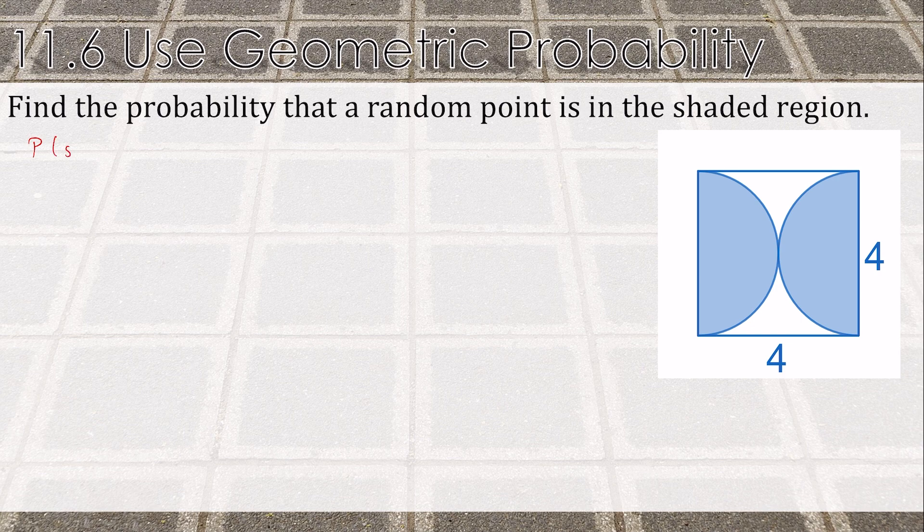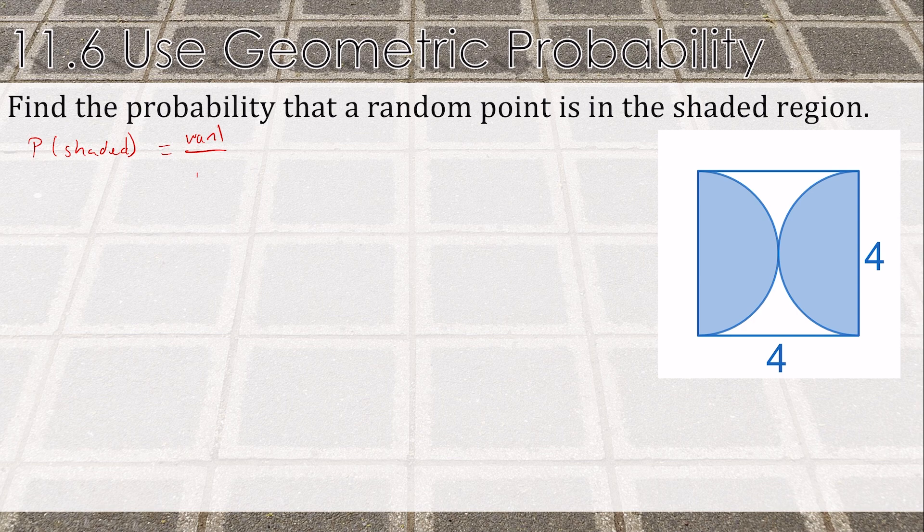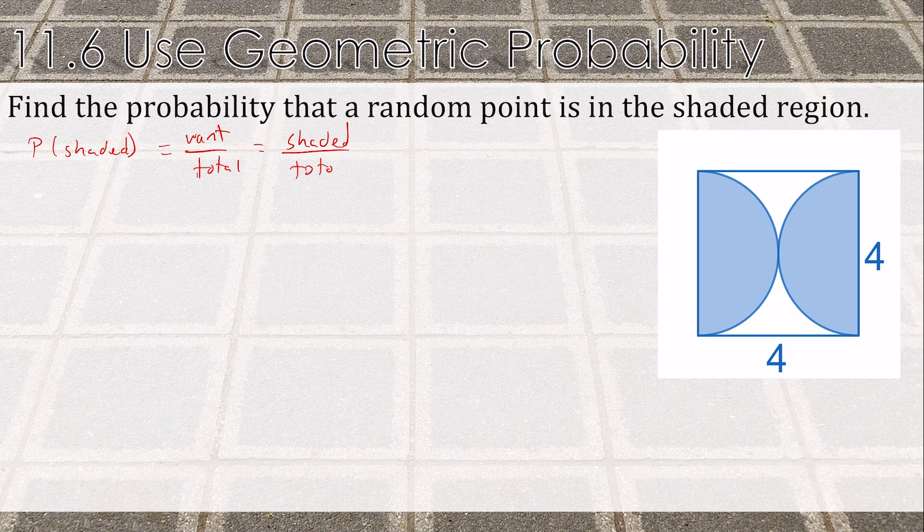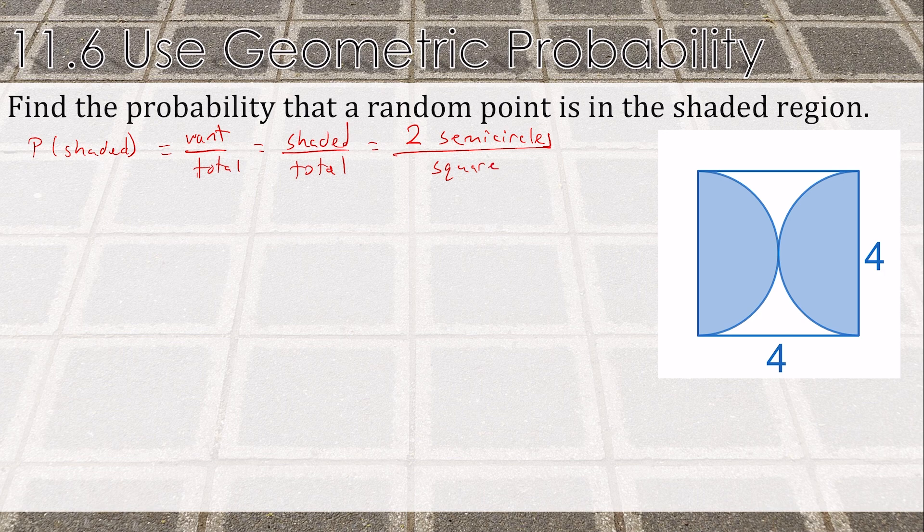So the probability of the shaded—what do we have that's shaded? It's what we want over the total. We want the shaded over our total. The shaded is two semicircles, and the total is a square.